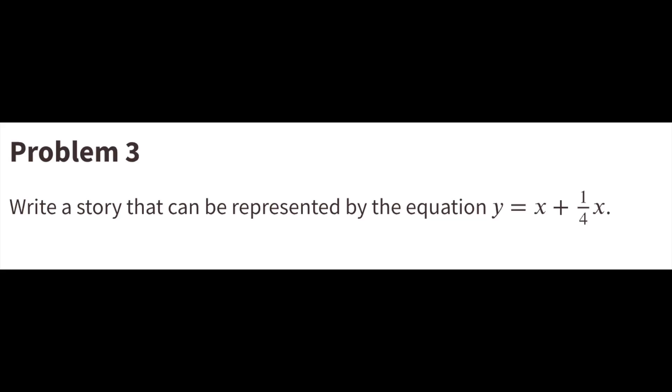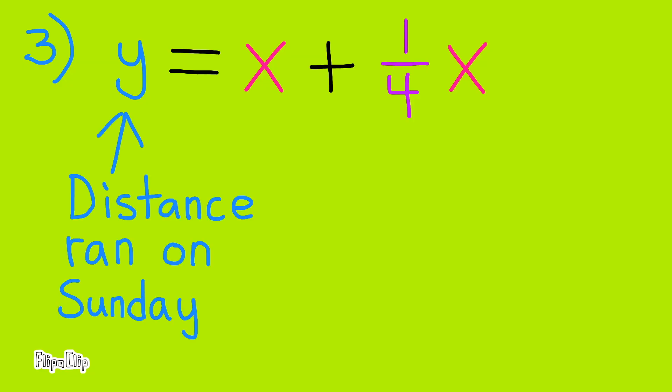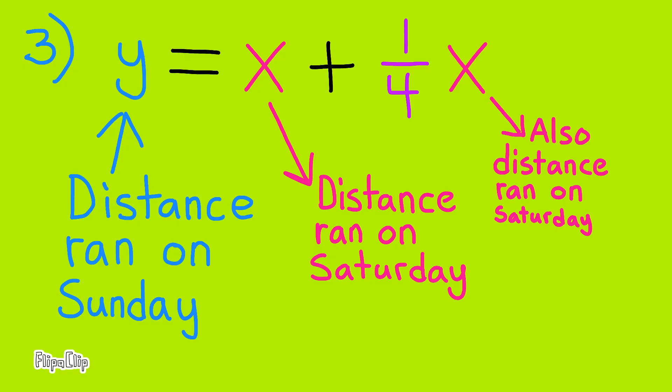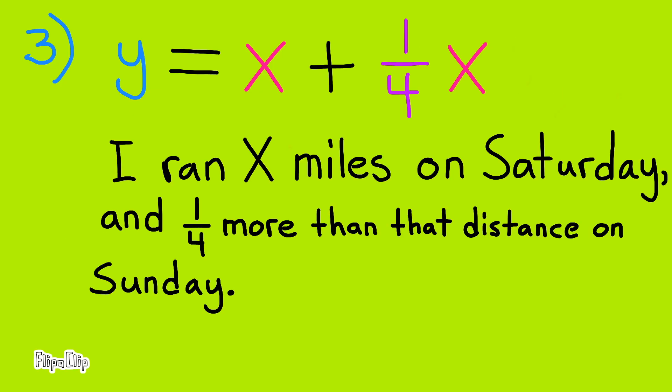Number 3. Write a story that can be represented by the equation Y equals X plus 1 fourth X. Y could equal the distance ran on Sunday. And X could equal the distance ran on Saturday. This X also represents the distance ran on Saturday. And 1 fourth of X means 1 fourth of the distance ran on Saturday. I ran X miles on Saturday and 1 fourth more than that distance on Sunday.